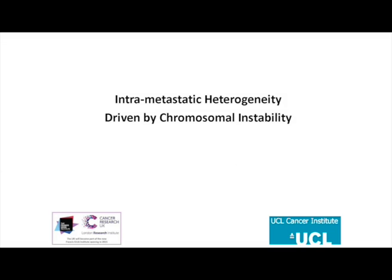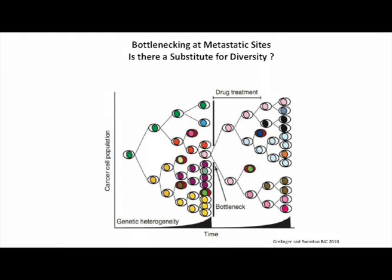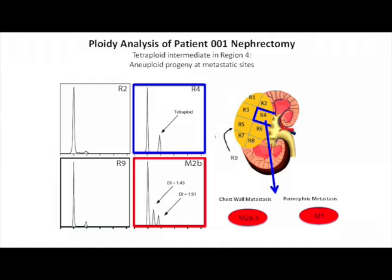When we looked at our first patient, we examined chromosomal instability. At the metastatic sites, mutations were essentially almost identical in the chest wall and perinephric metastases. This made us think that if we could identify a mutation present in all metastatic sites, we might find a new drug effective against all metastatic disease. We applied FACTS analysis — counting chromosomes in each biopsy — to determine whether chromosomal instability was occurring, and found that region 4 of the tumor was most similar to both metastatic sites.